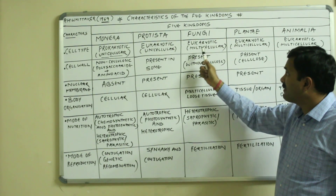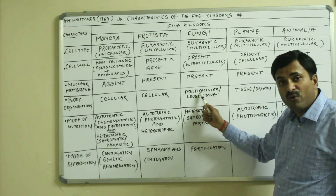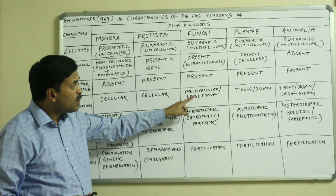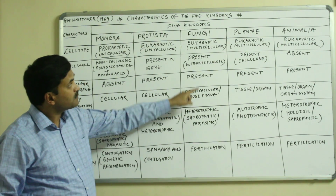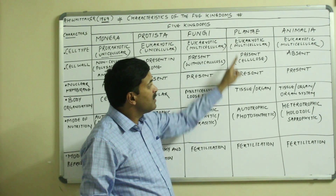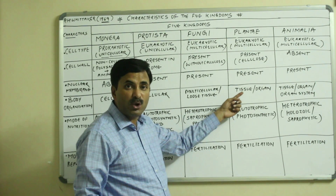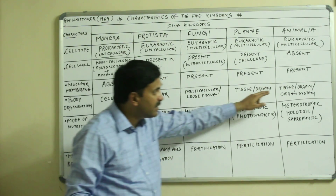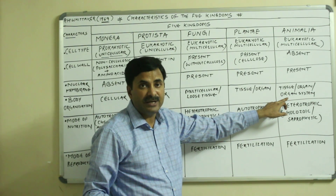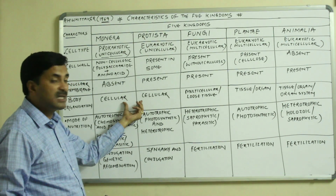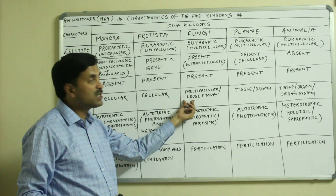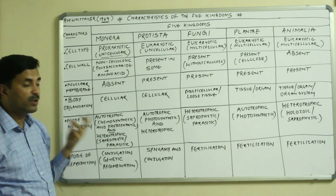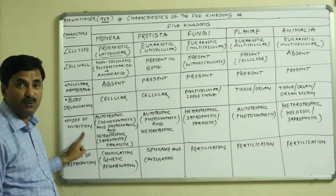Fungi are multicellular organisms, and these multicellular organisms form loose tissue — not compact or dense tissue; the cells in this tissue are loose. In Plantae, the body organization is tissue grade or organ grade. In Animalia, the body organization may be tissue grade, organ grade, or organ system grade. So: Monera and Protista — cellular; Fungi — multicellular with loose tissue; Plantae — tissue and organ type; Animalia — tissue, organ, or organ system type.